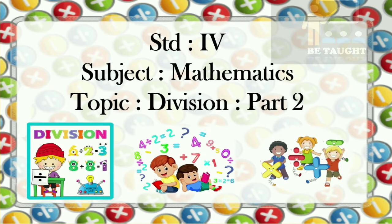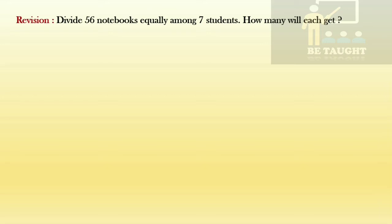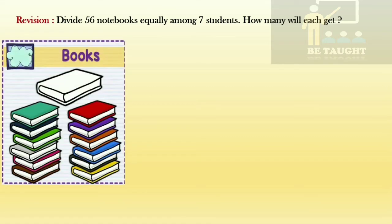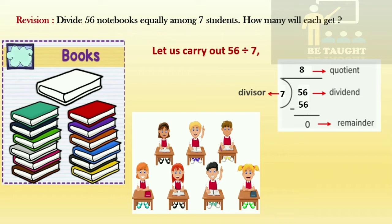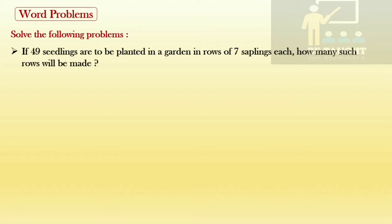Hello children! Today in mathematics for standard four, we are going to learn a new lesson: Division Part Two. Let's revise what we have done in Part One. Divide 56 notebooks equally among seven students — how many will each get? We carry out 56 divided by 7. Seven eights are 56, so we get remainder 0. Here, 56 is the dividend, 7 is the divisor, 8 is the quotient, and 0 is the remainder. Final answer: each one gets eight notebooks.